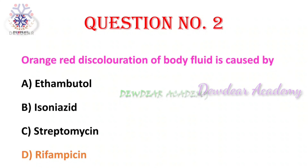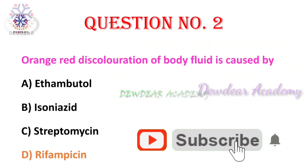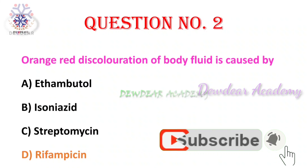Rifampicin causes orange-red discoloration of body fluids like tears, sweat, urine, and breast milk, and may result in permanent staining of clothing and contact lenses. Knowledge of this discoloration may decrease the anxiety of patients if this discoloration occurs.